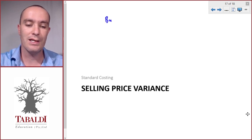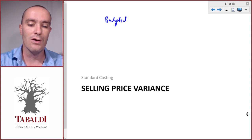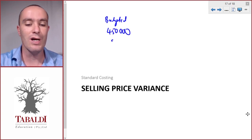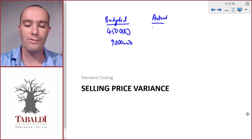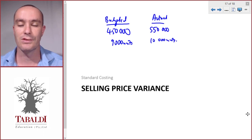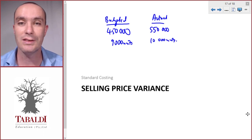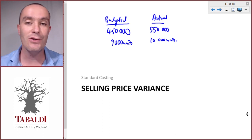We've got budgeted sales of 450,000 and that was for 9,000 units. Then we have actual sales of 550,000 and that was for an actual units sold of 10,000. So we sold more units than what we budgeted for and our sales value is more than what we budgeted for.